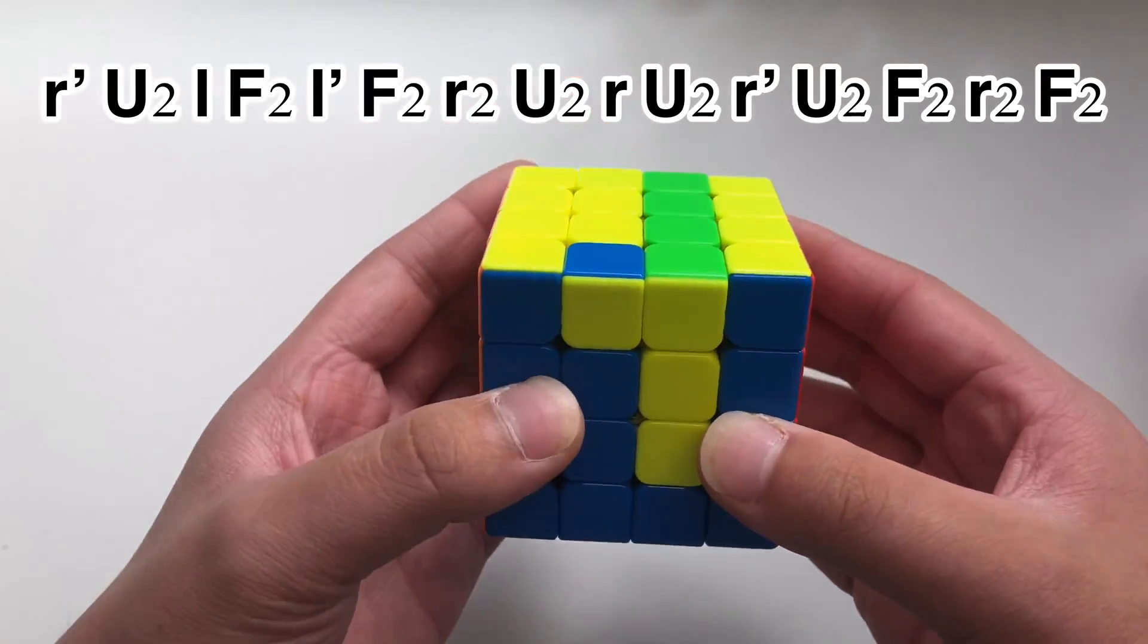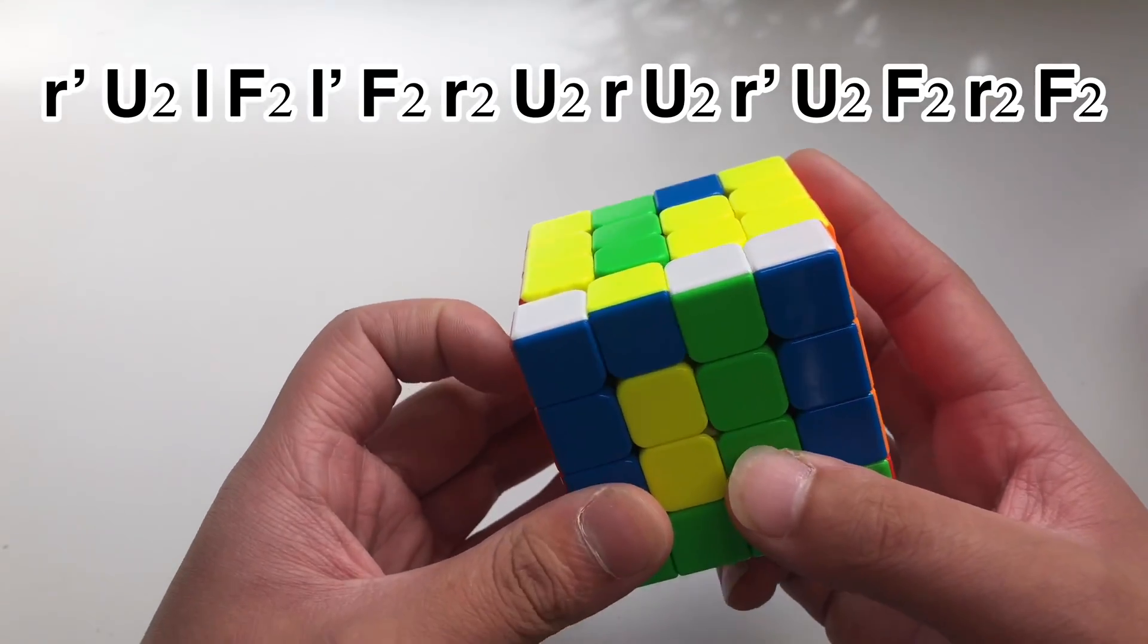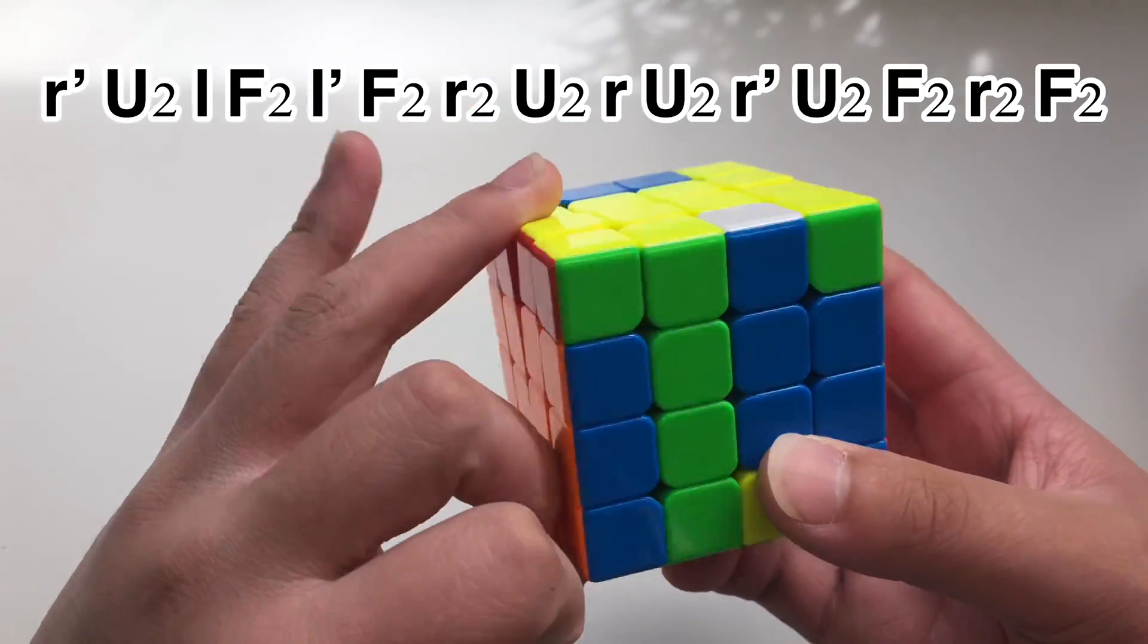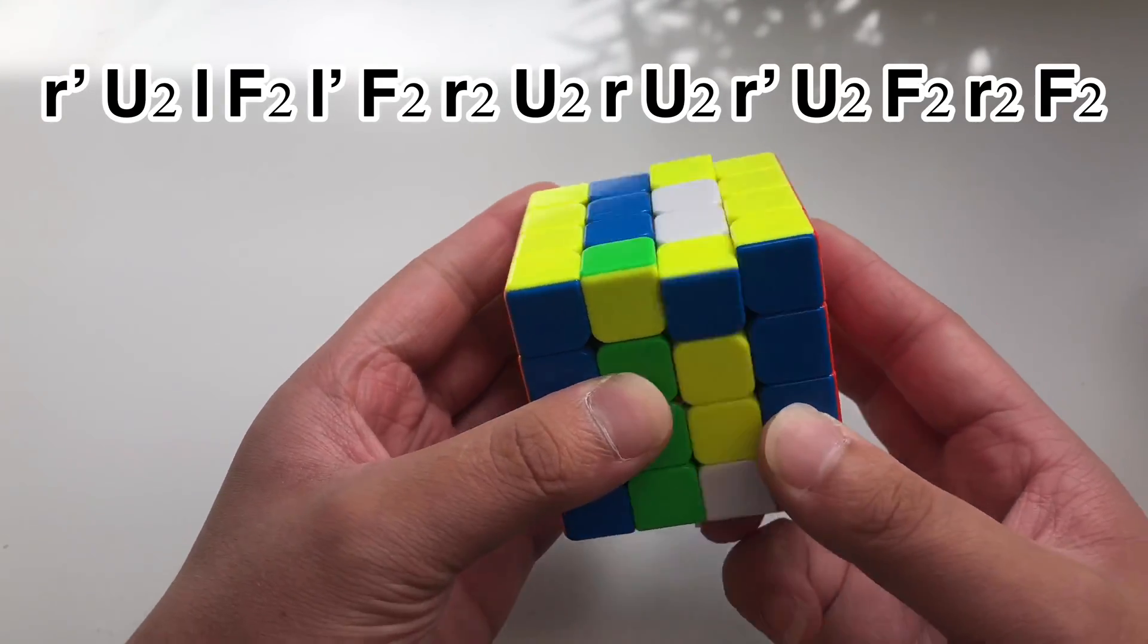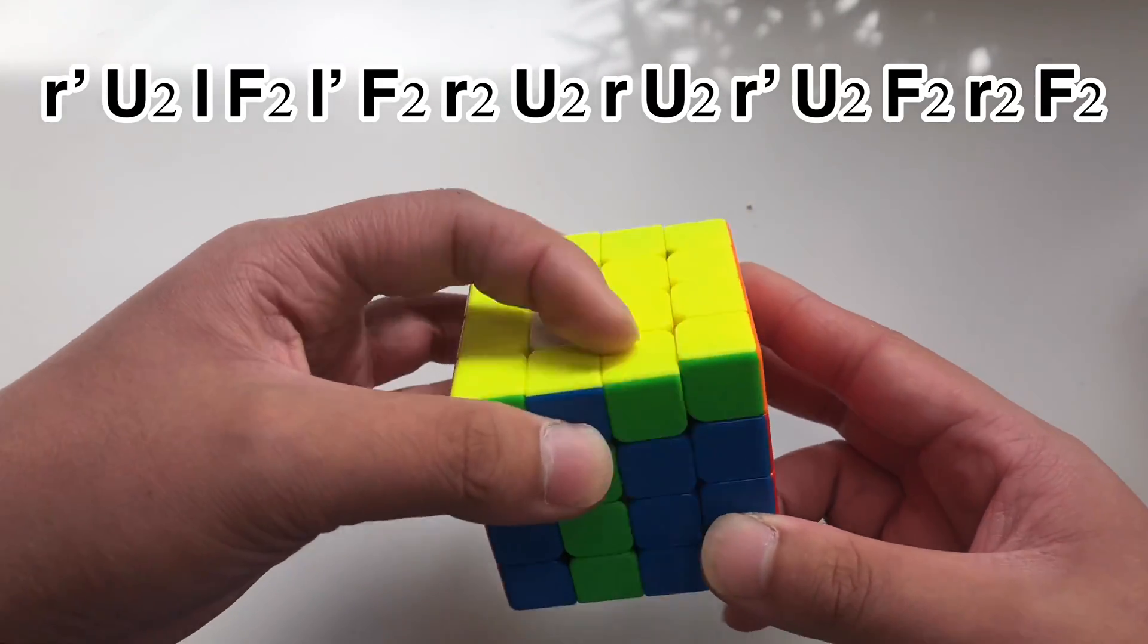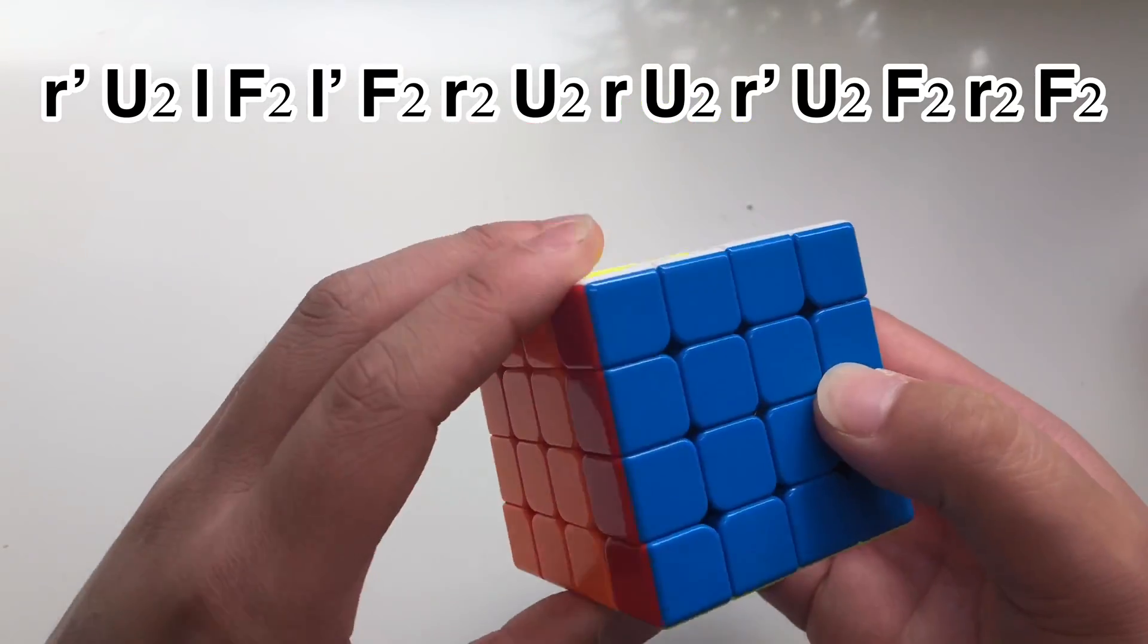Little r prime, U2, small l, F2, small l prime, F2, small r2, U2, small r, U2, small r prime, U2, F2, small r2, F2.